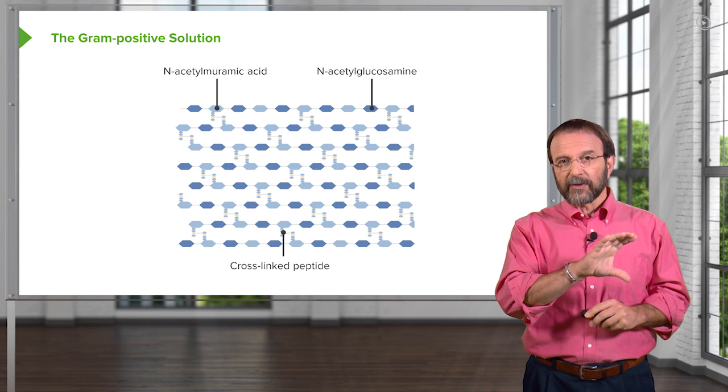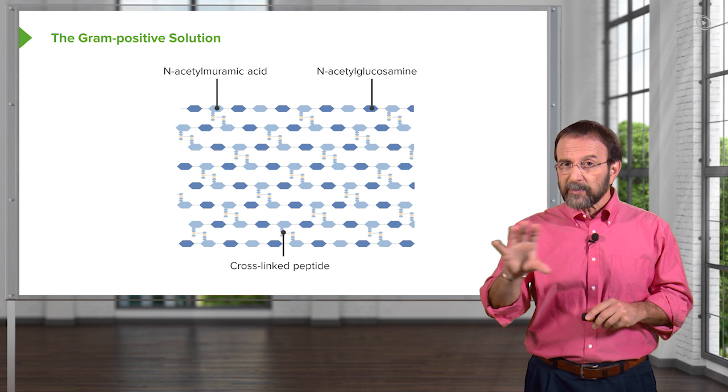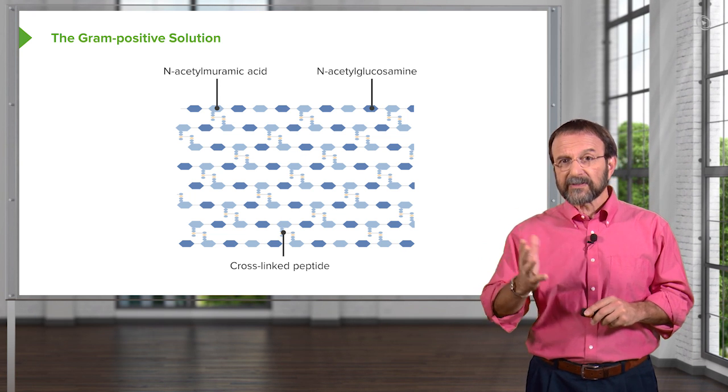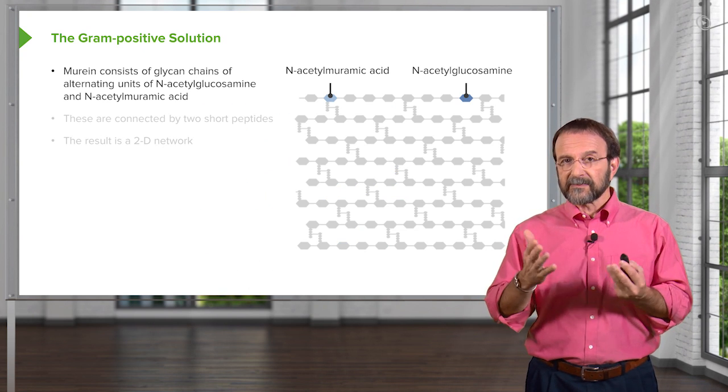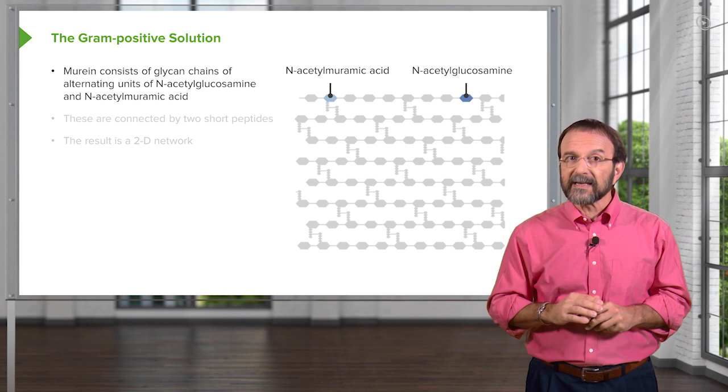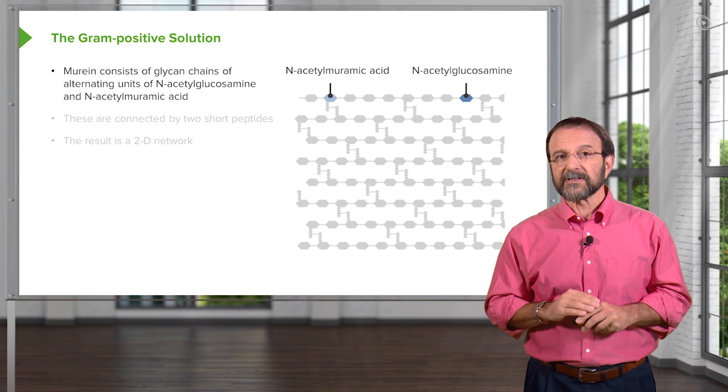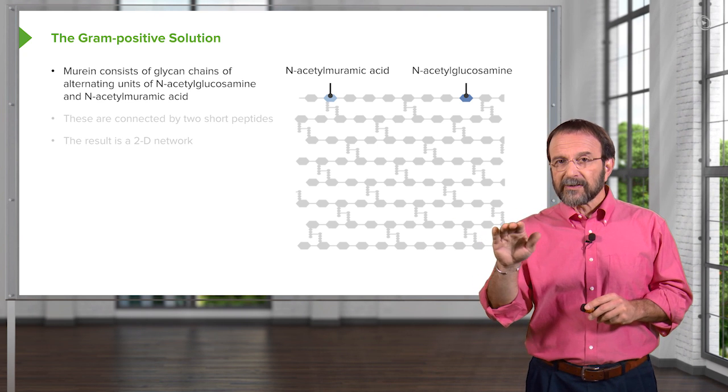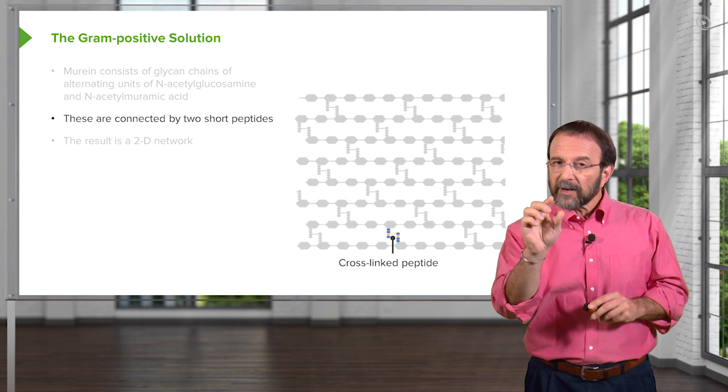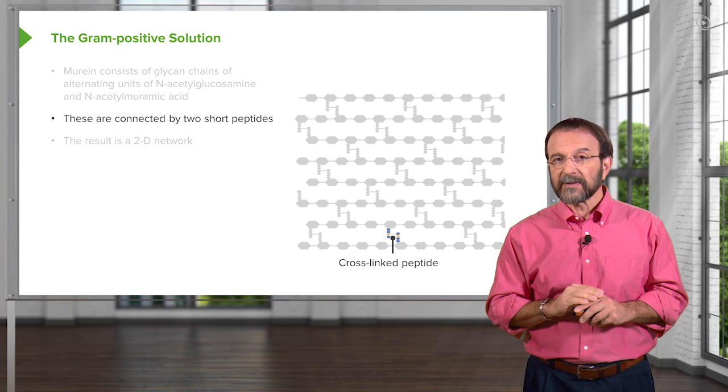This outer layer of the gram-positive bacteria, the peptidoglycan or the murine, is a polymer that forms a very protective sac around the bacterium. It consists of glycan chains of alternating N-acetylglucosamine and N-acetylmuramic acid, which you can see here. And there are many layers of these sugars. They're connected together by short peptides made up of short amino acids.